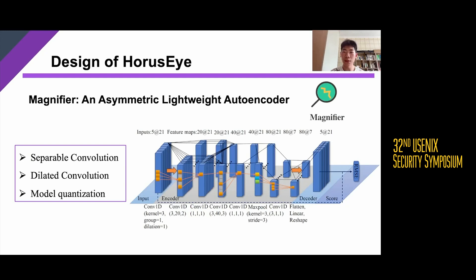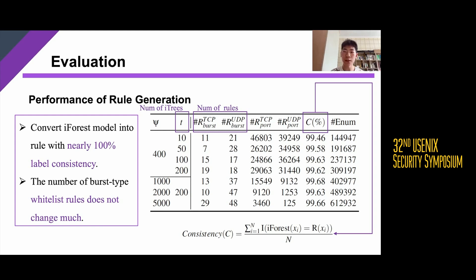The last component is Magnifer, which operates in the centralized control plane. We design a series of lightweight components to reduce the false positive rate while achieving high throughput. First, we design an asymmetric autoencoder to reduce the number of parameters while ensuring model performance. Second, we use separable convolution rather than basic convolution, which further reduces computational complexity. Third, we use dilation convolution to achieve a large receptive field without increasing layers and parameters. Finally, we compress the model through model quantization to improve throughput.